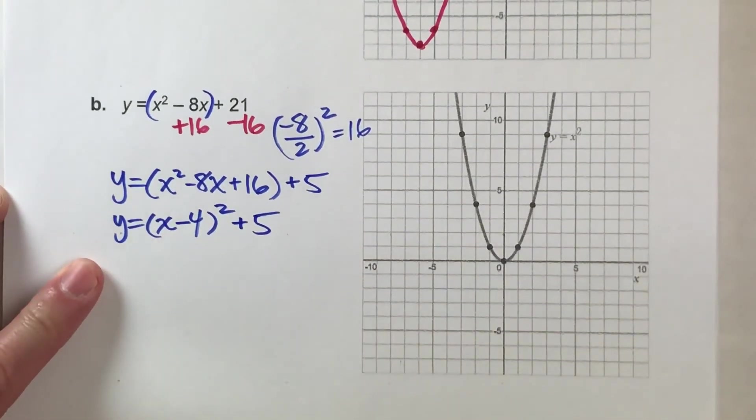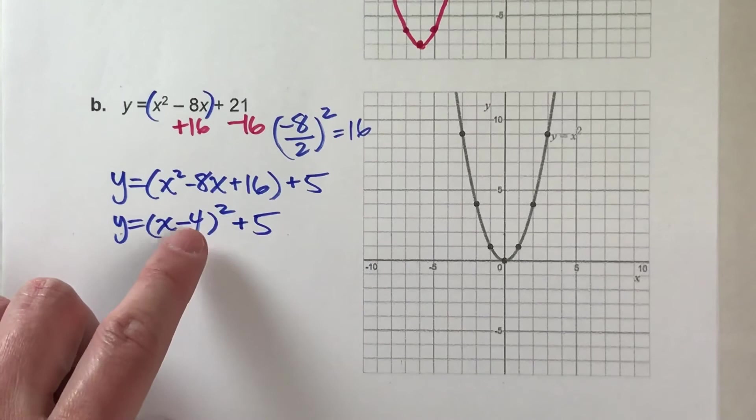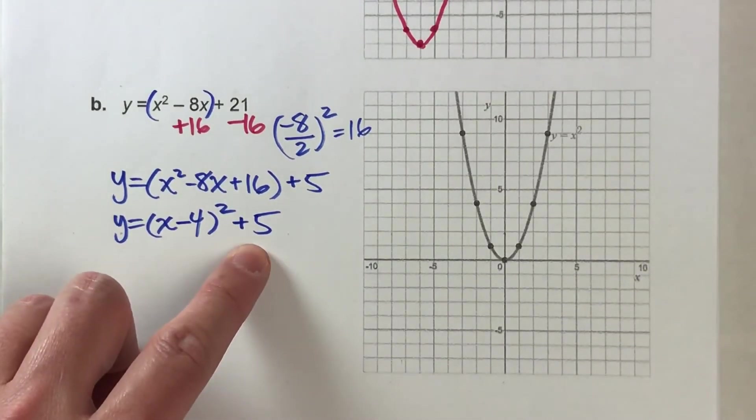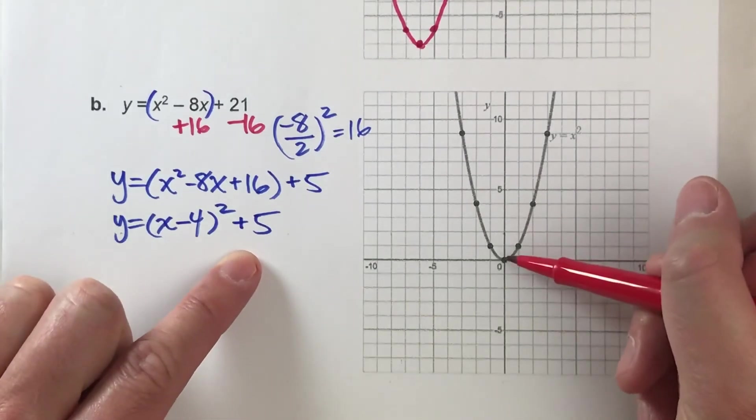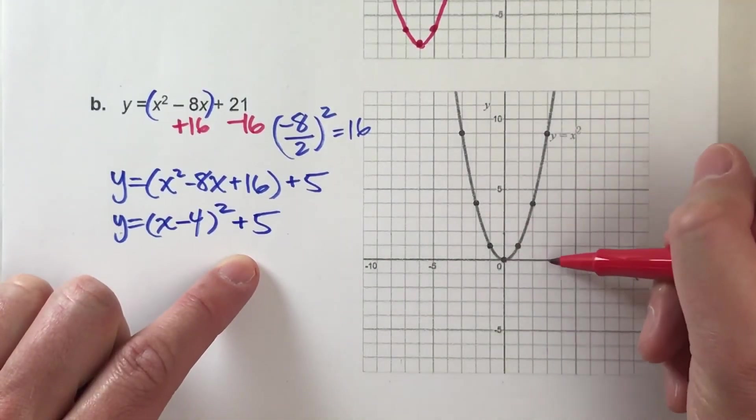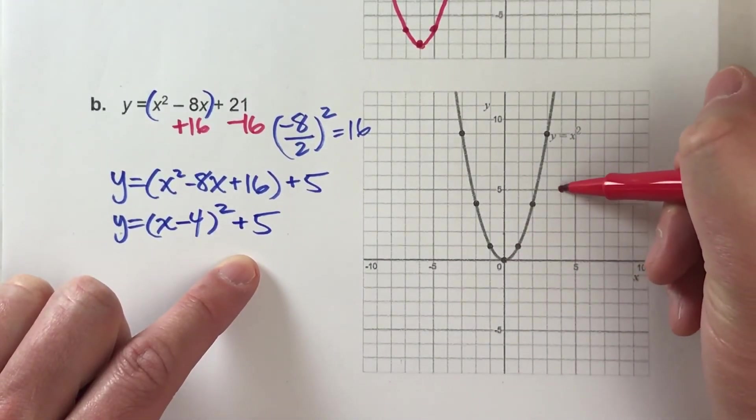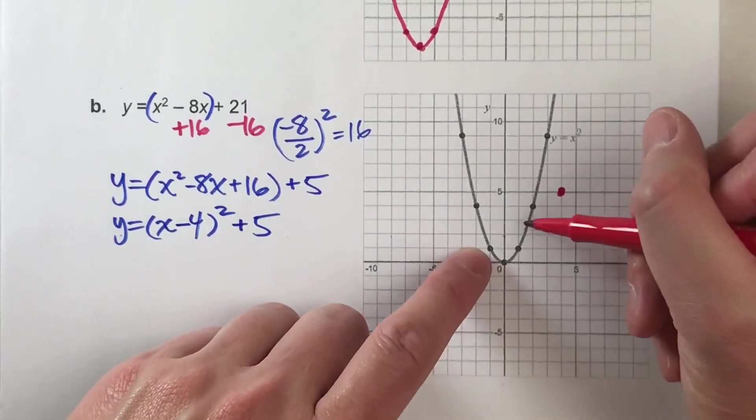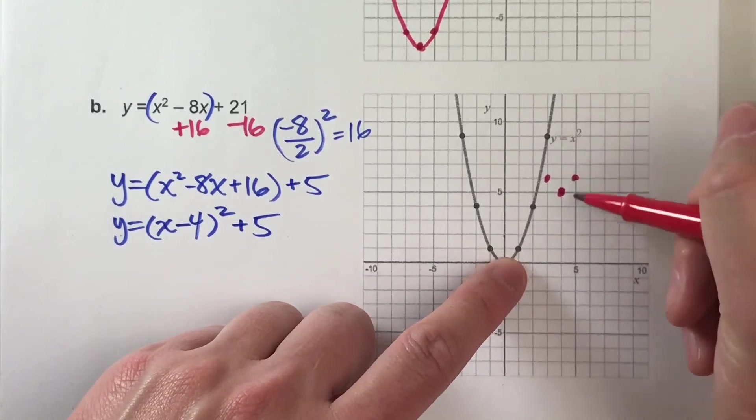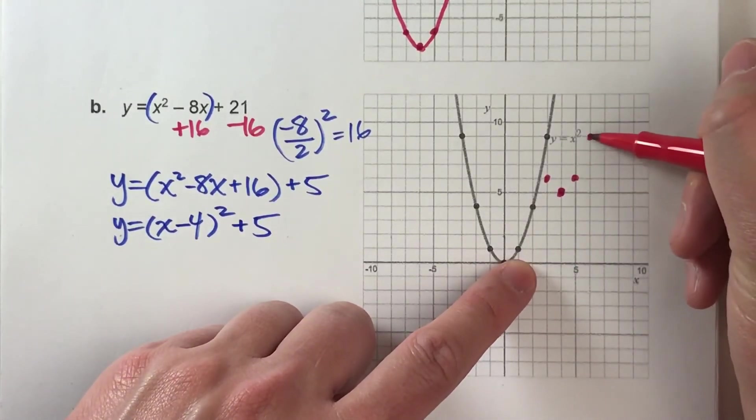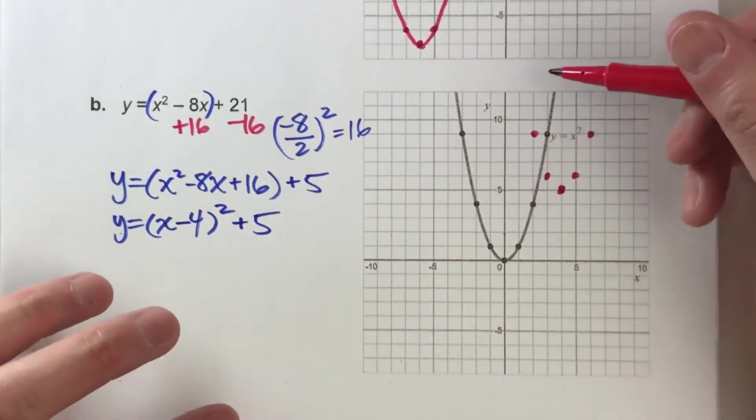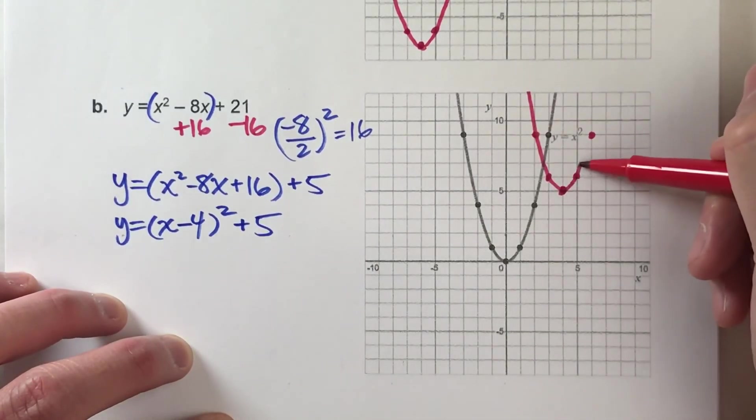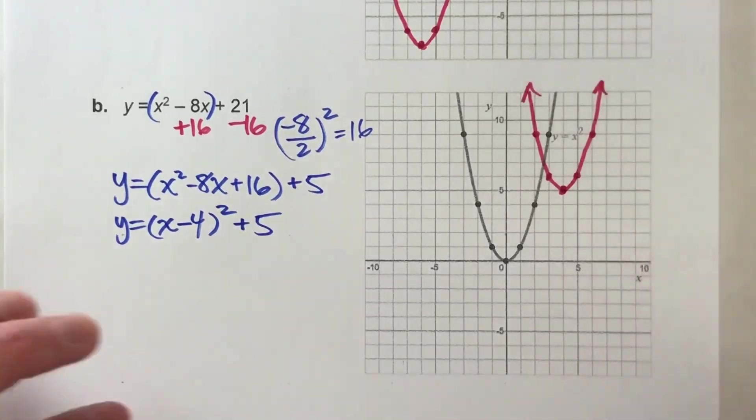So let's check it out. This says my vertex is going to shift to the right 4 units, and then move up 5. So here's my vertex, right 4, up 5. Here's my new vertex. And now I just have to copy the rest of the pattern. So this is up 1, this is up 3, 3. And then 5's not going to fit. So it's going to look something like this.